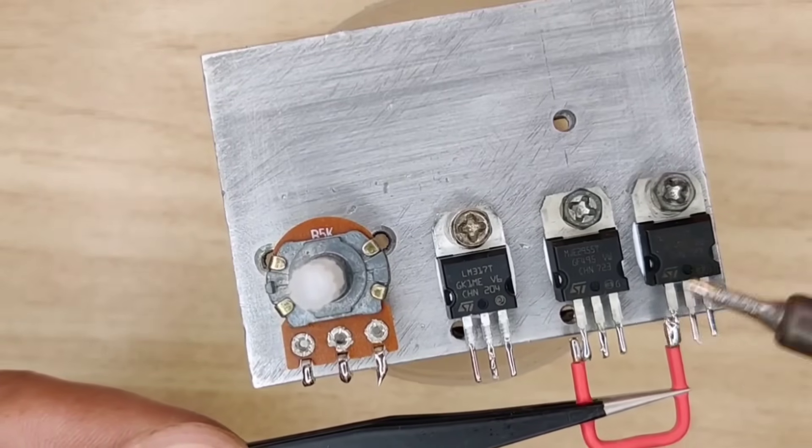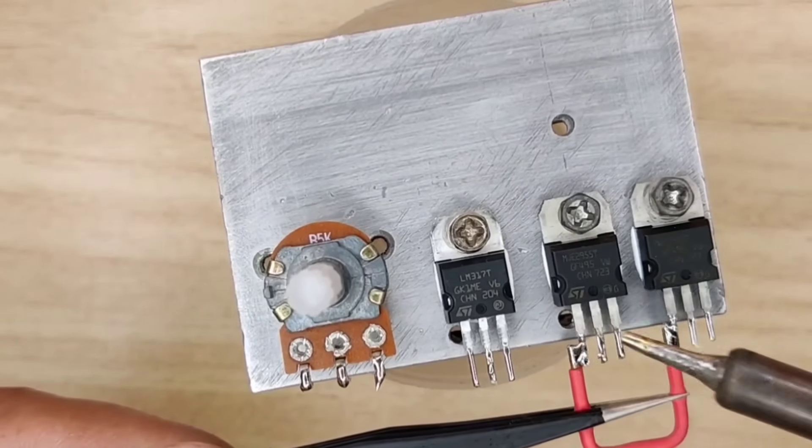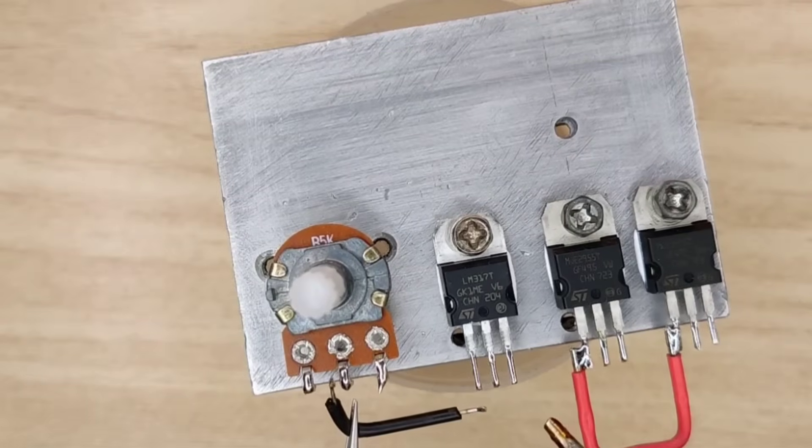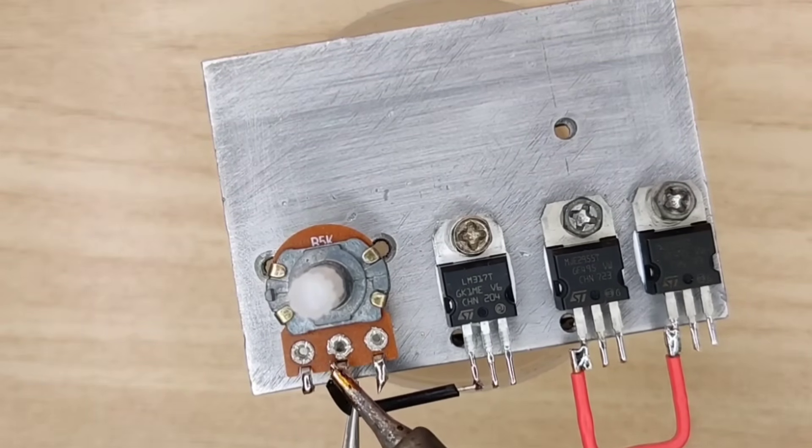Solder pin 1 of both transistors together, and solder pin 1 of LM317 and pin 2 of the potentiometer.